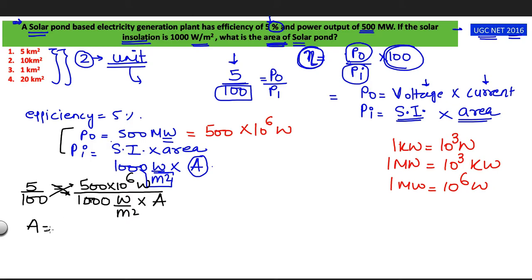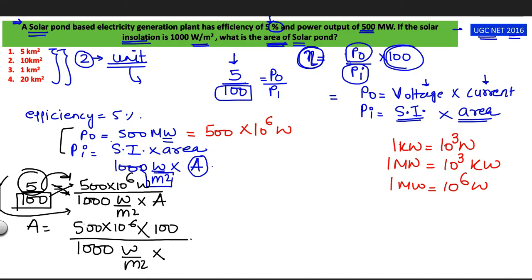Simplify this equation using cross multiplication. So my area would be 500 into 10 to the power 6 into 100. This 100 will go in the numerator here and in the denominator I already had 1000 watt per meter square into this 5 from the left hand side will go in the denominator on the right hand side. So here I can cancel 5 from 5 and these 3 zeros from the denominator will cancel 3 zeros in the numerator.